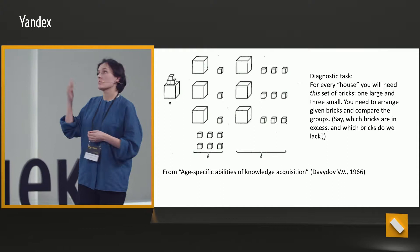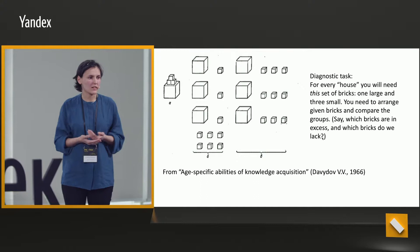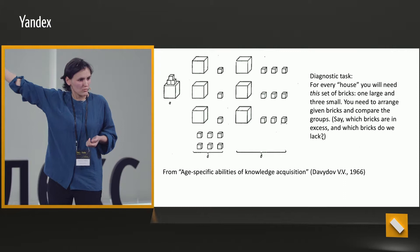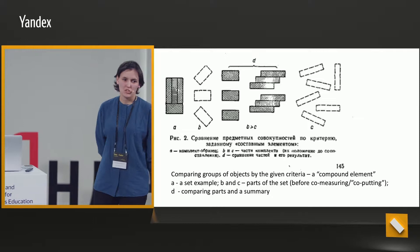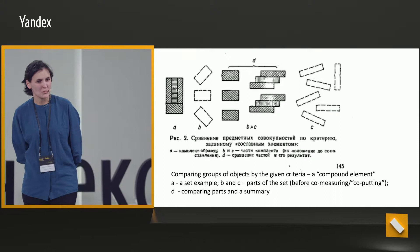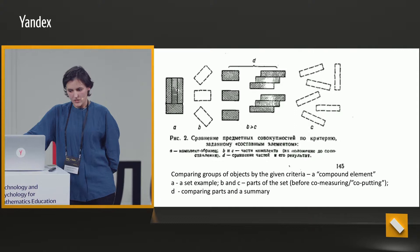Children are asked to arrange given bricks and compare the groups. The children should get distracted from having those small bricks and say that actually there is the same number — that the ratio is observed. There is the task of comparing groups of objects by given criteria. When everything is built, there will be only small elements, but at the beginning it seemed there were more small bricks. This was written in Davidov's work, but there was no continuation.